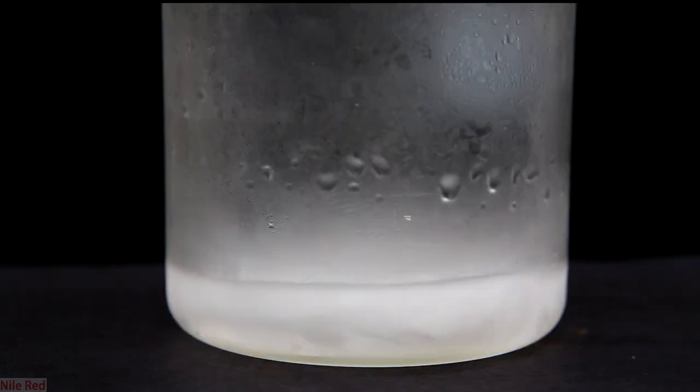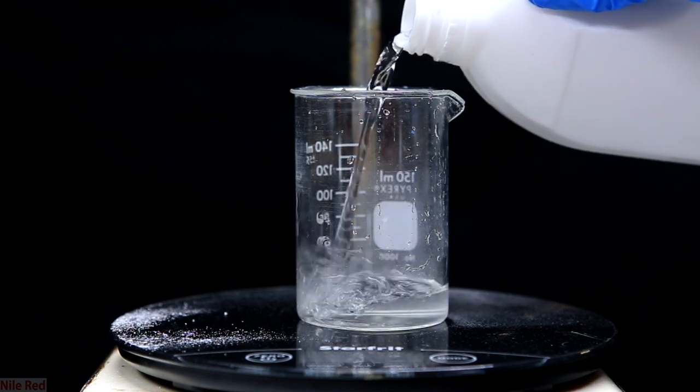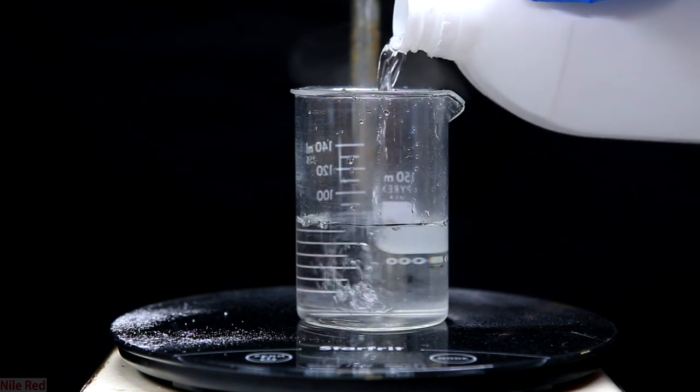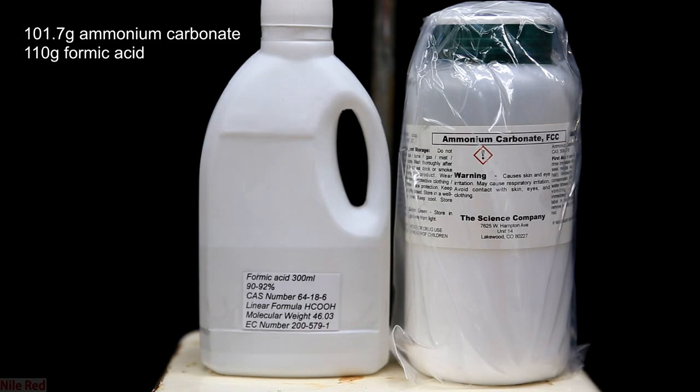I'm sure I'll find a use for it in the future though, because the Leucart reaction is pretty useful and I'm sure I'll find something that I can use it on. So for this experiment, we'll only need two ingredients: formic acid and ammonium carbonate.